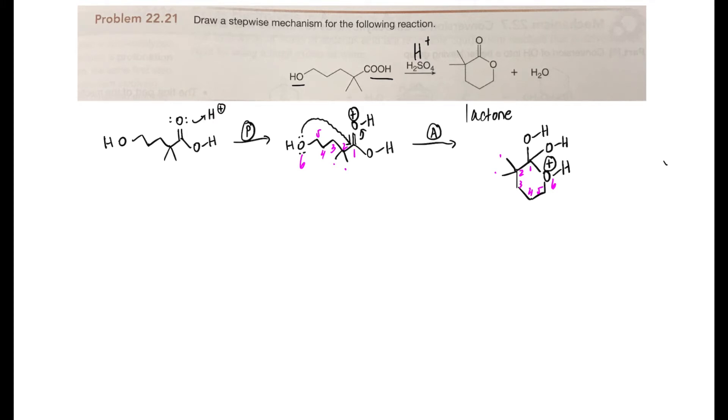When the oxygen at six attacks, it becomes a +1 formal charge as you can see here. Now presumably this is in water; there's water being formed, maybe there's water in the sulfuric acid. So I'm going to use water to do the general acid-base deprotonating and protonating. Here we go, deprotonate that oxygen. The whole point of doing all of these different protonations and deprotonations is to avoid generating an O-.